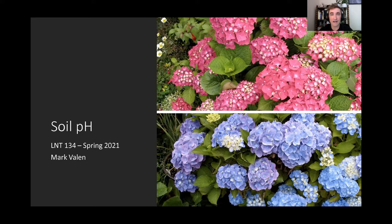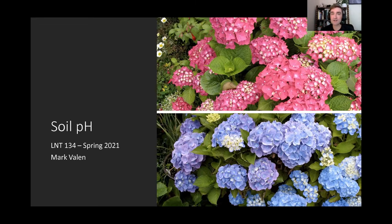Aluminum ions become available in acidic soil, and that's what changes the flower color to bluish or purple. In alkaline soil, the aluminum ions are tied up, not soluble, not available to the plant, and so we have pink flowers. There are different cultivated varieties that favor different flower colors, and not every species of hydrangea has this characteristic. There are white flowers as well. It's a really good illustration of how pH can make a difference in your soil.